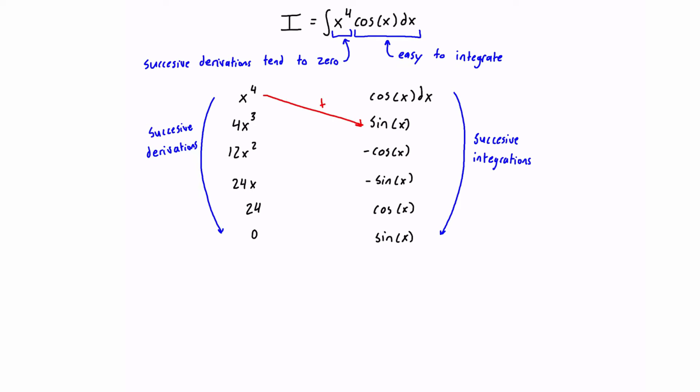The next step is to just draw diagonal lines going from top right to bottom left and alternate the signs on each of them. The solution of our integral is just going to be equal to the sum of products along our diagonals, taking care to apply the correct positive or negative sign to each term.